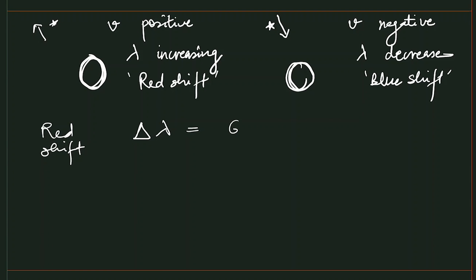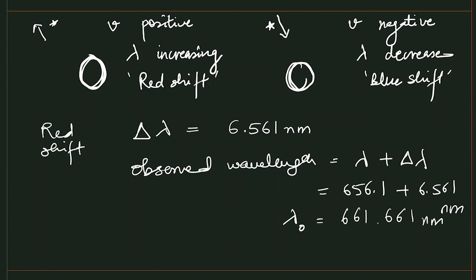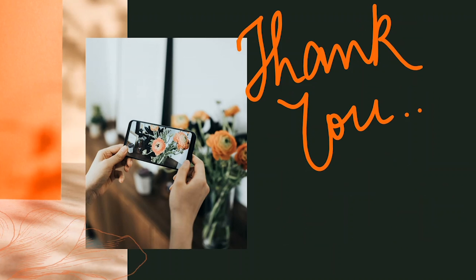Since we have a red shift we add the change: the observed wavelength = λ + Δλ = 656.1 + 6.561 = 662.661 nanometer. This is our observed wavelength. That is the solution for this part. If you have any doubts, write in the comment box. If you find this video helpful, please like, share, and subscribe to the channel. Thank you for watching.